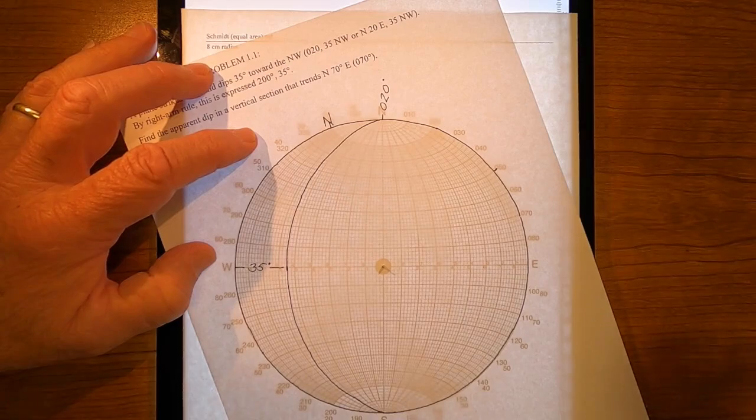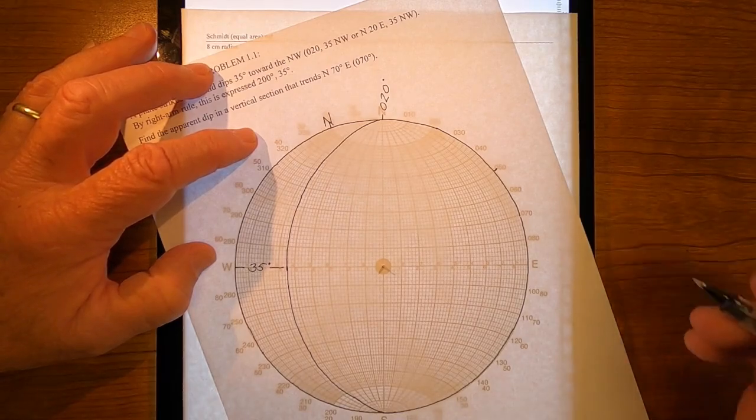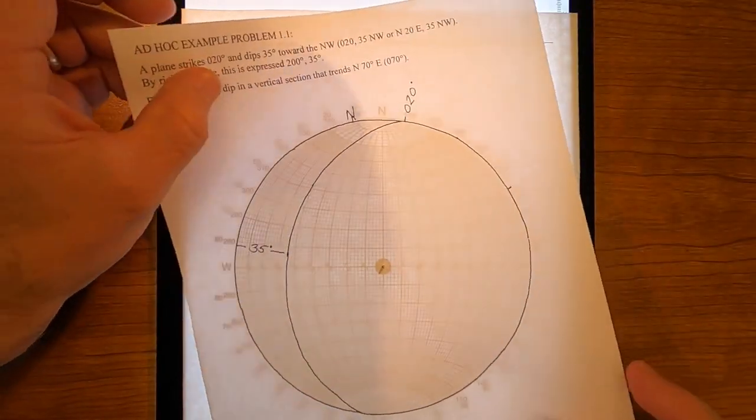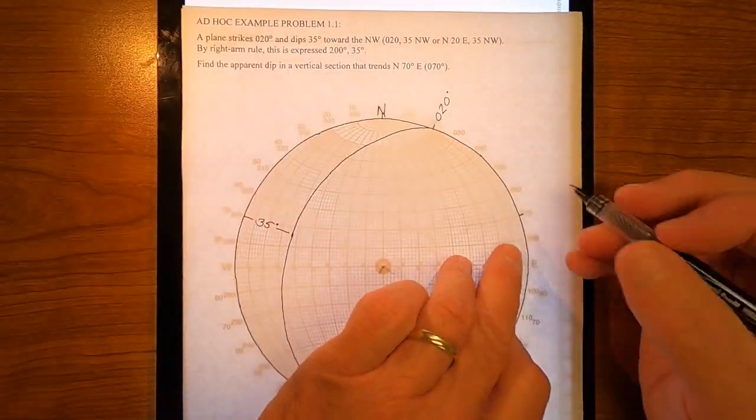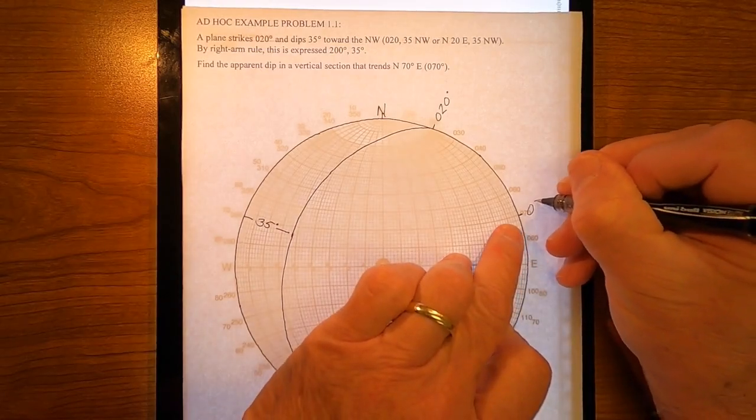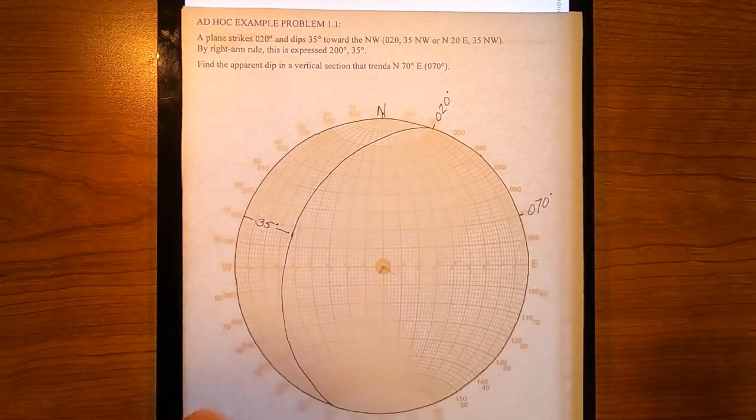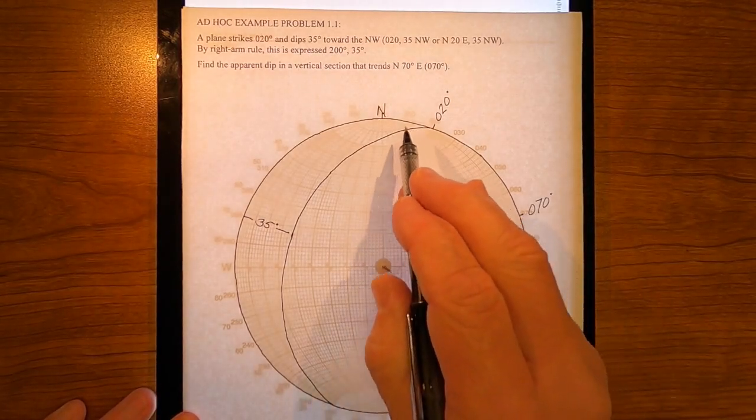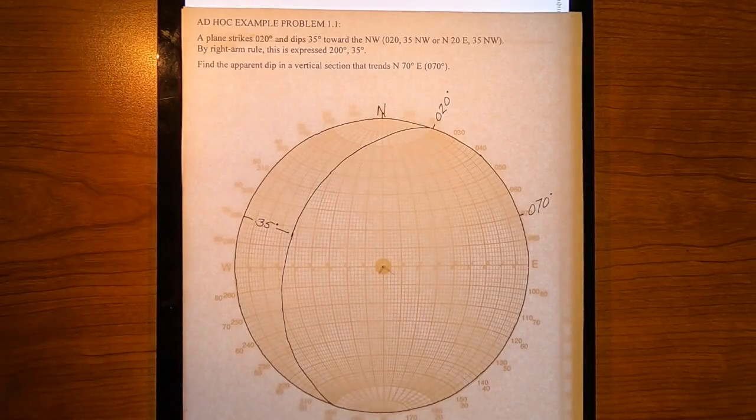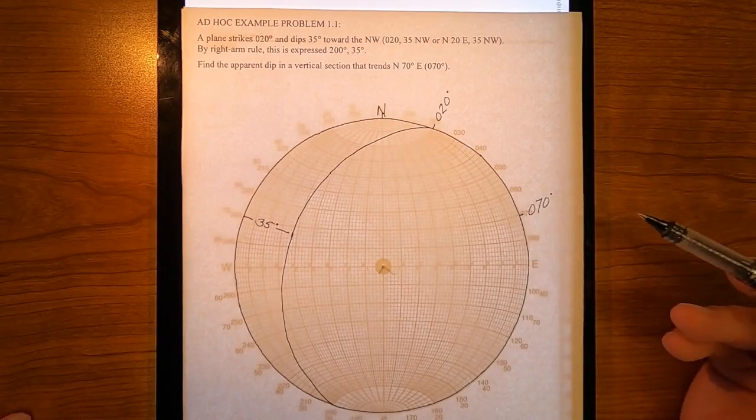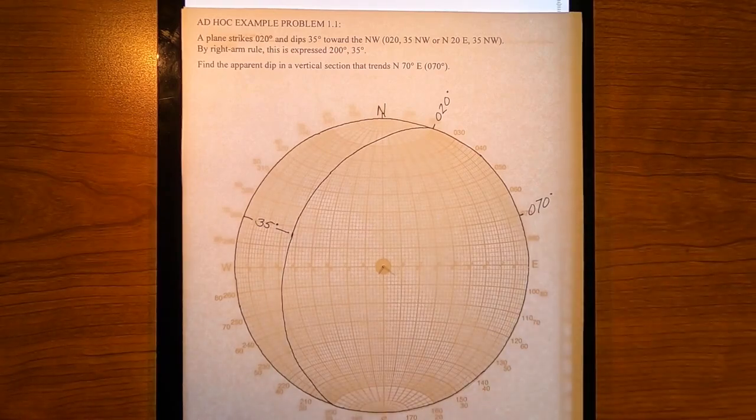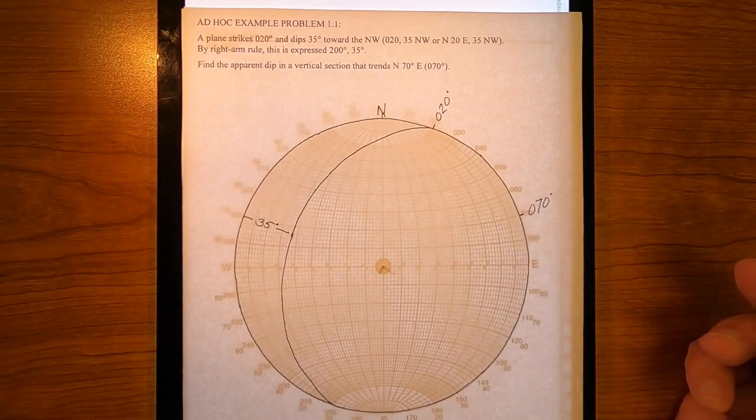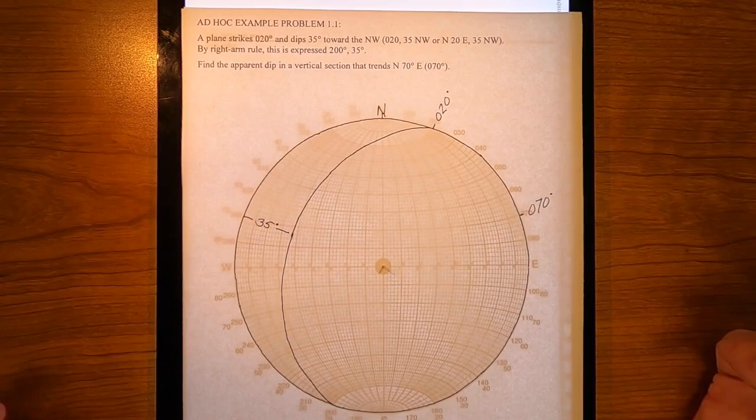Okay. Now notice something. You'll remember that this direction right here was zero seven zero. But that does not intersect this plane. Well, think about it. It all makes sense. That's simply a compass direction. It makes no difference. Zero seven zero plus one eighty is what? Two five zero. So, two five zero is the back azimuth of zero seven zero.